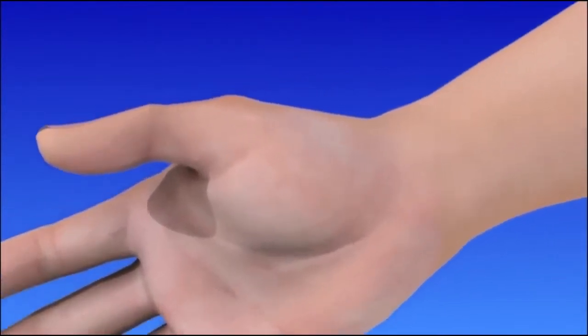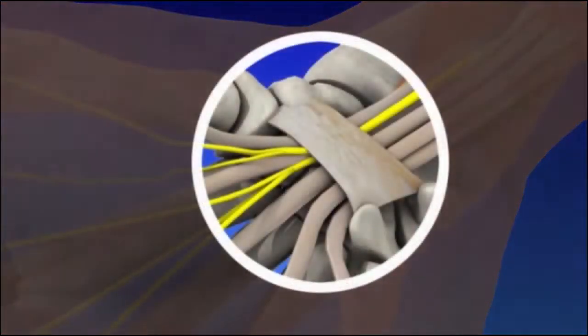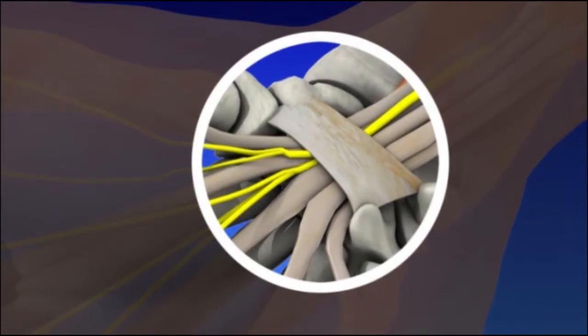Carpal Tunnel Syndrome occurs when the pressure within the tunnel increases, putting pressure on the median nerve, usually from enlargement of the tissues surrounding the tendon in the tunnel. What causes this is largely unknown.